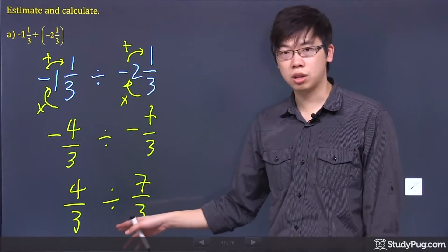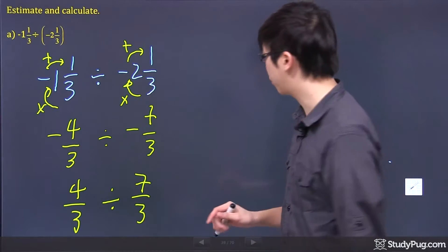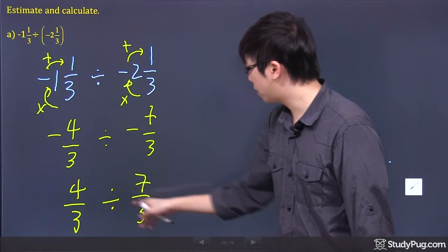If you want, I can actually rewrite it. Everything's the same except that the negative signs are gone, because negative negative becomes positive whenever you do multiplying or dividing. Then you still have the division sign. Here's a little trick for us. 4 over 3 divided by 7 over 3.